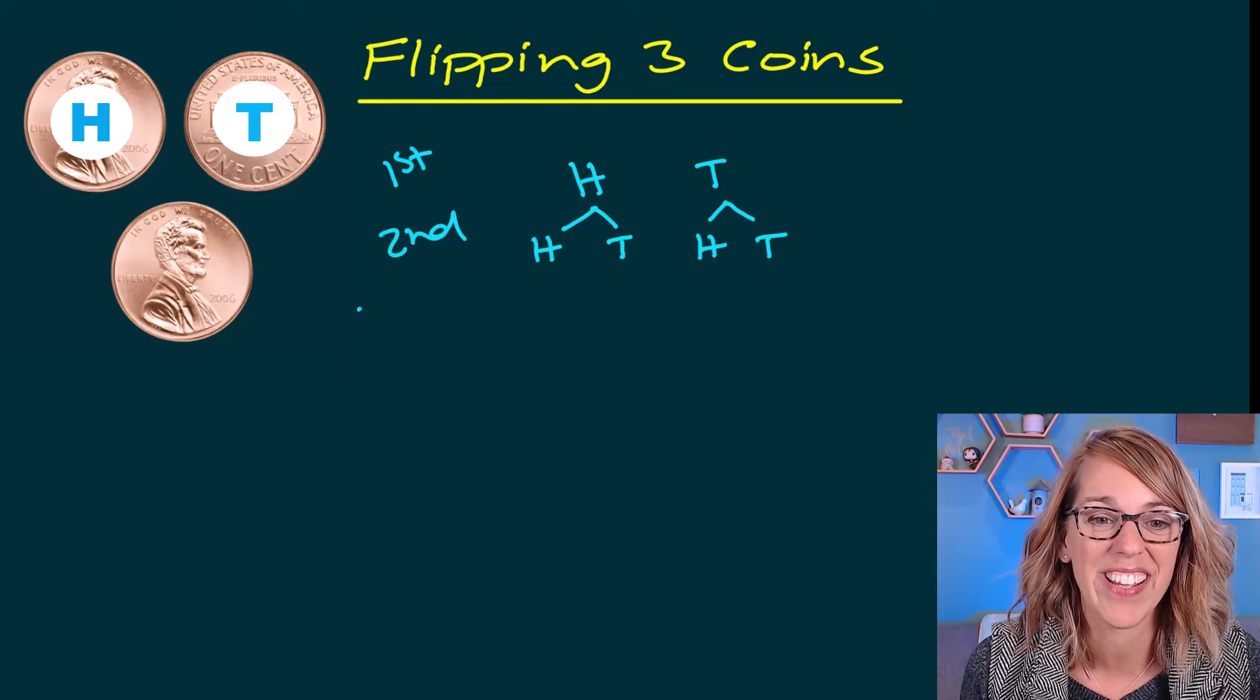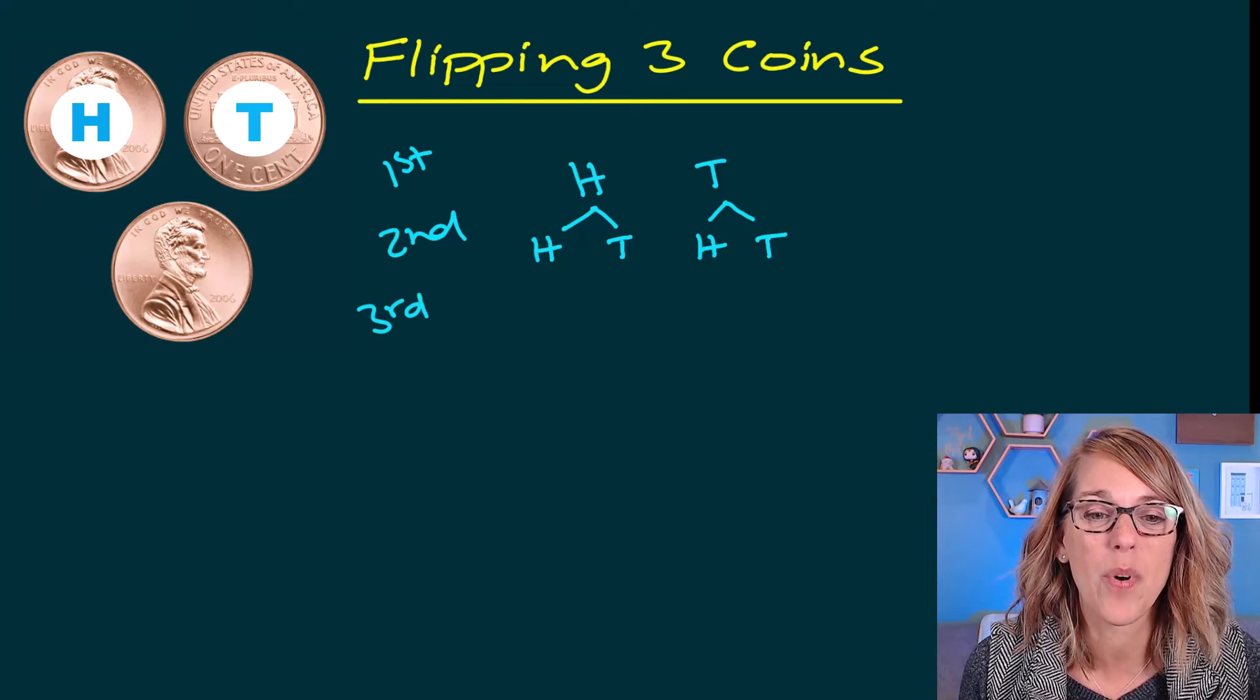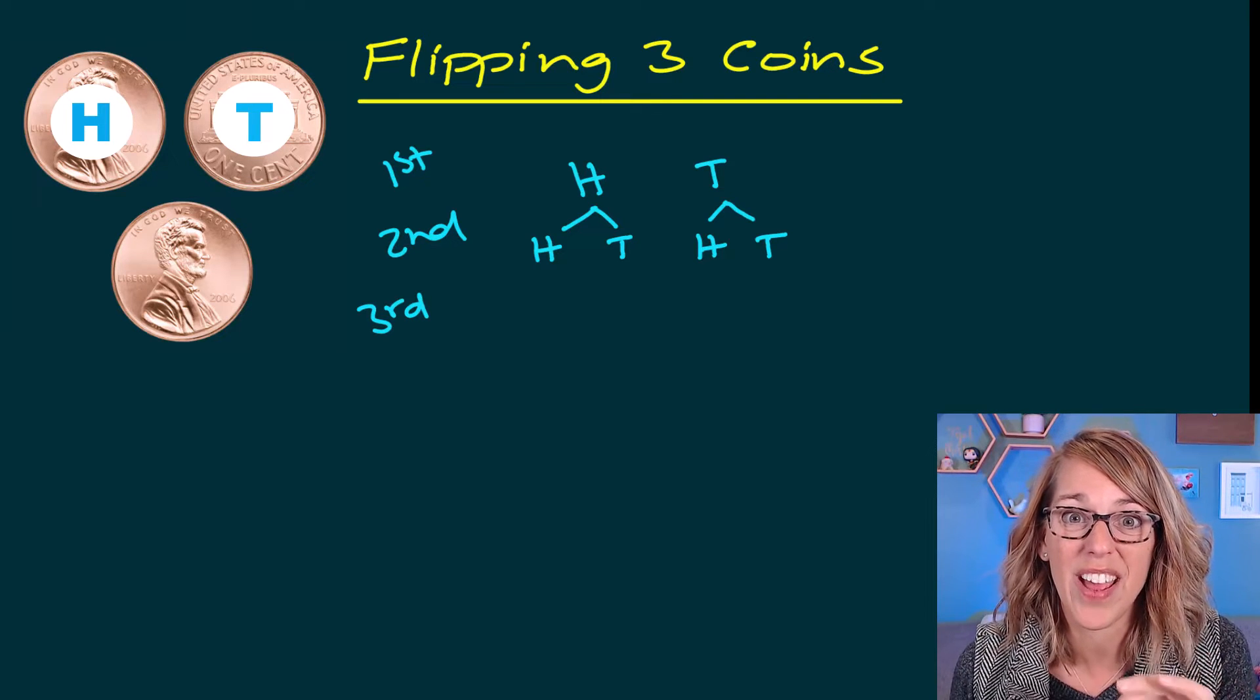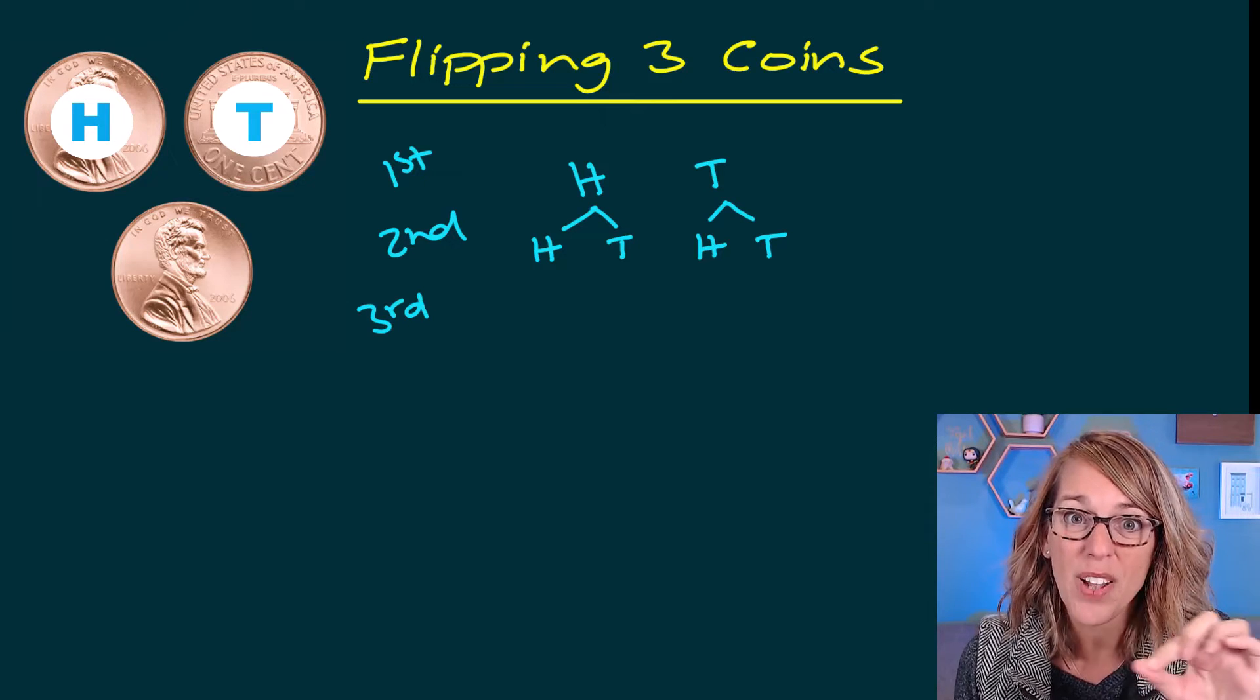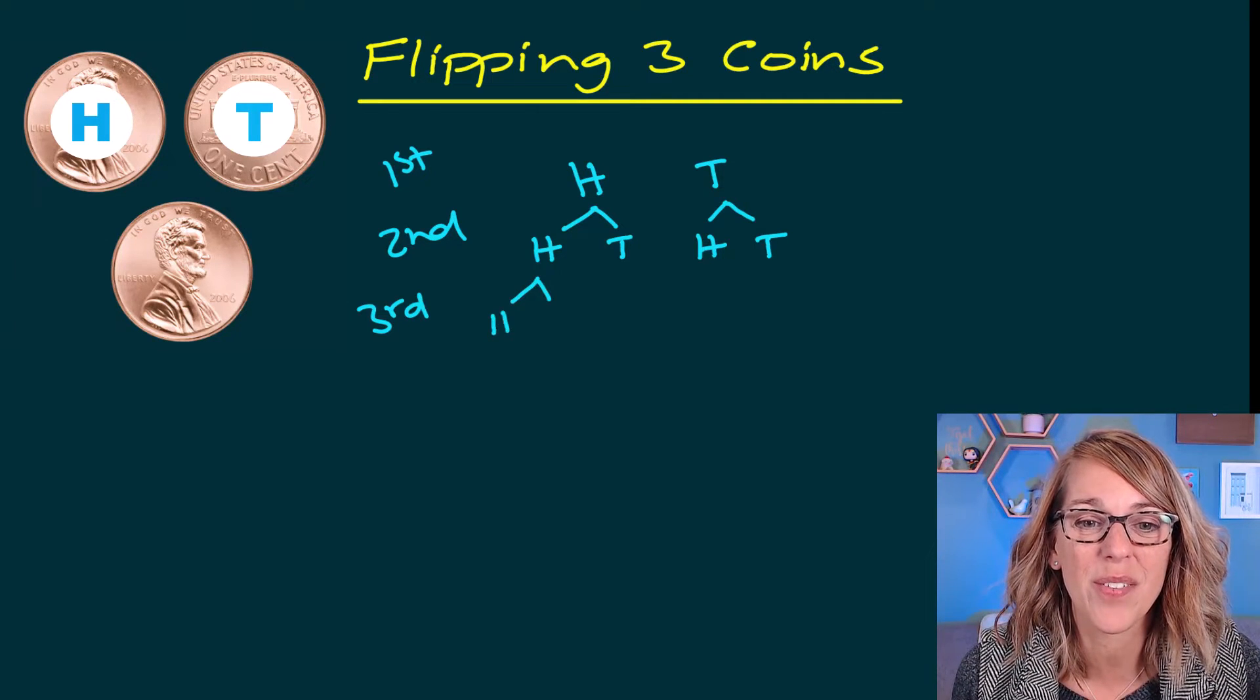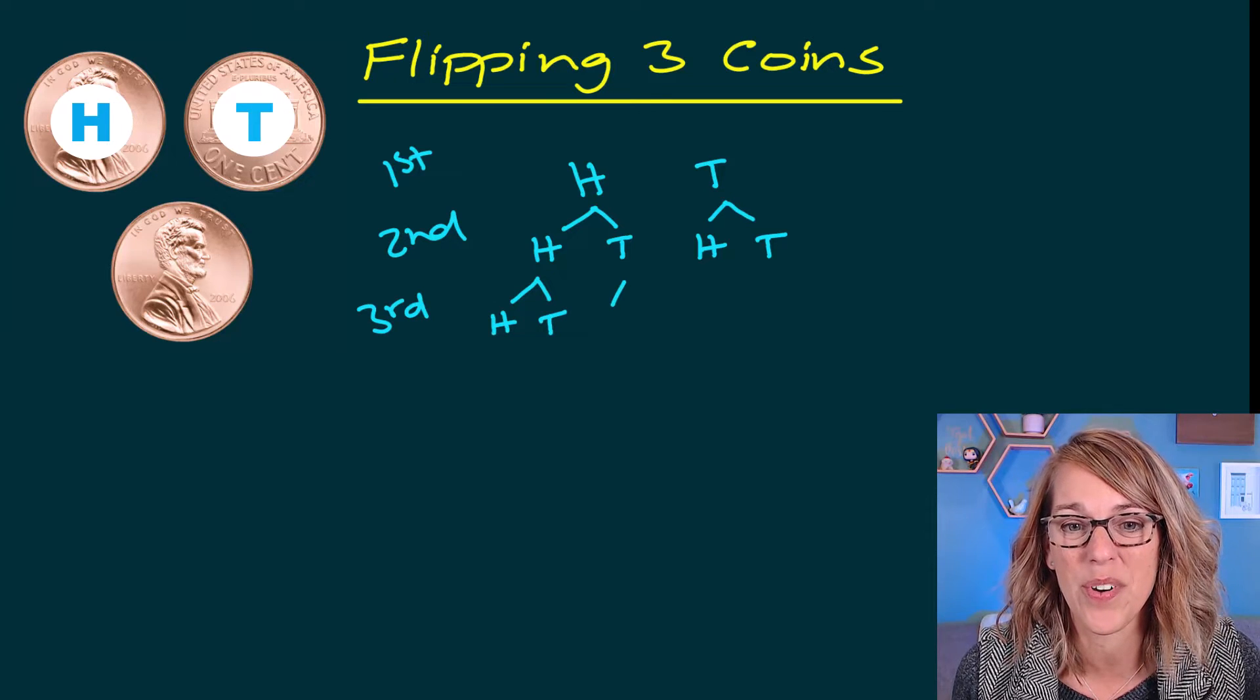And then I've got one more coin to record. Now that third coin could also land on either heads or tails. So I'm going to follow the outcomes I've got so far and then follow each of those with either a head or a tail.